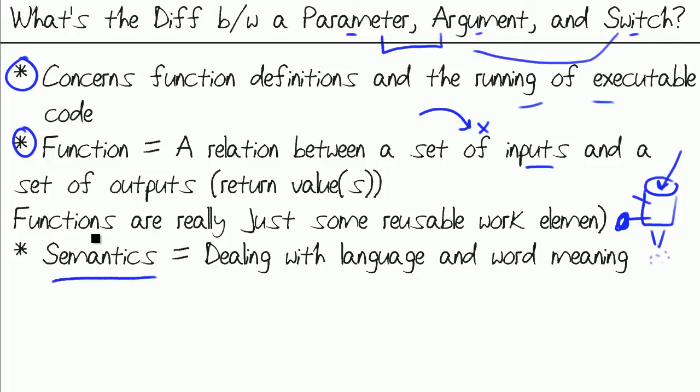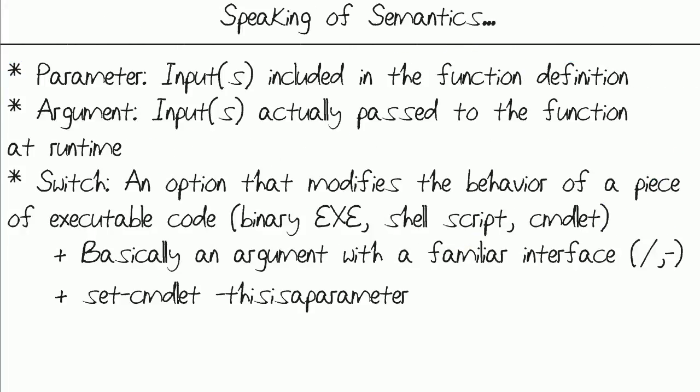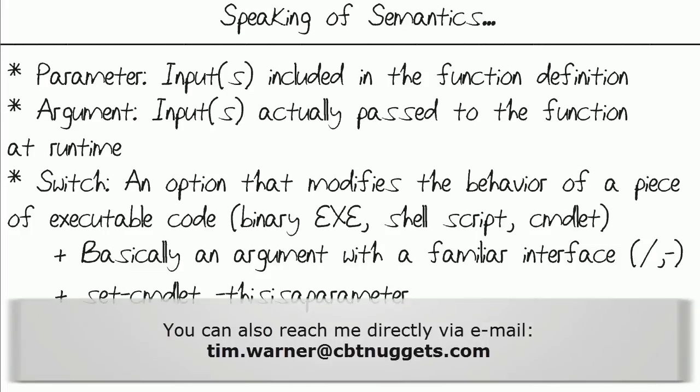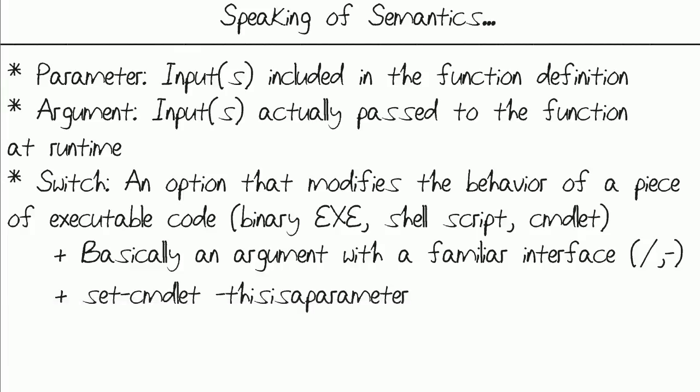And of course all three come down to the function, which beyond this geeky definition that probably doesn't make sense to a lot of people at face value, we can consider in programming a function as just some reusable element of work. So speaking of semantics, this is my understanding of the difference between parameter, argument, and switch, and I'm very much interested in learning your take on the matter. Please feel free to leave comments. I am a daily YouTuber, so I'll respond and we can get a conversation going here.